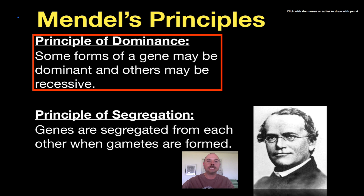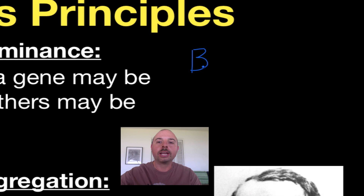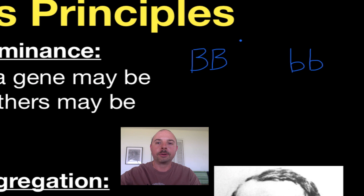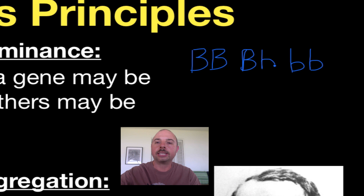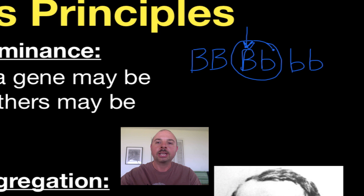The principle of dominance is the idea that while we have different genes or different alleles for a particular gene, one of them is going to be dominant, which we typically write as a capital letter, and one of them is going to be recessive, written as a lowercase letter. Both homozygous dominant and homozygous recessive are examples of homozygous genotypes. We can also have heterozygous, where we have one of each. The principle of dominance tells us that if an individual has a dominant allele, it will dominate over the recessive allele.